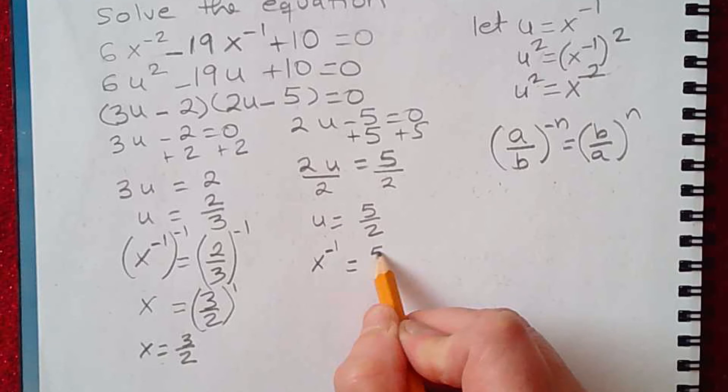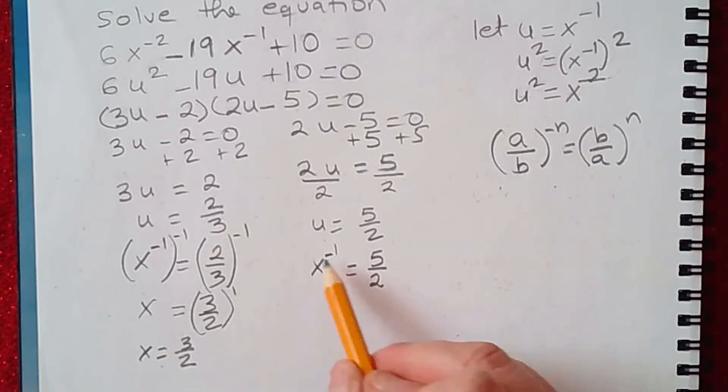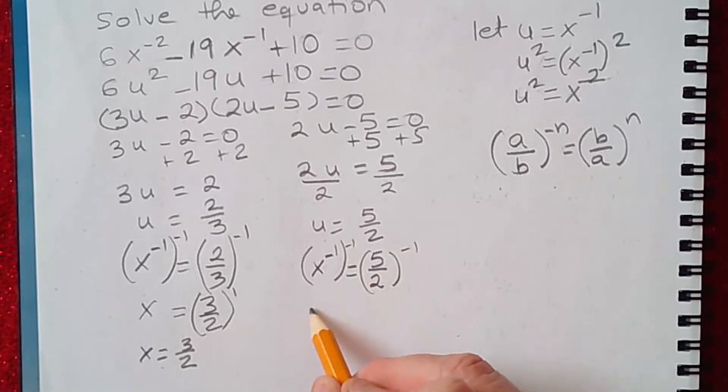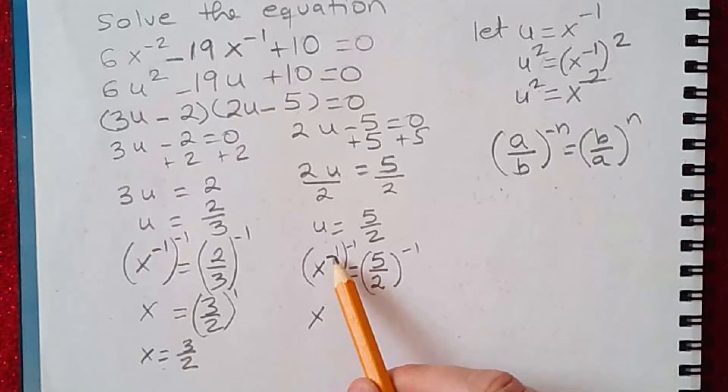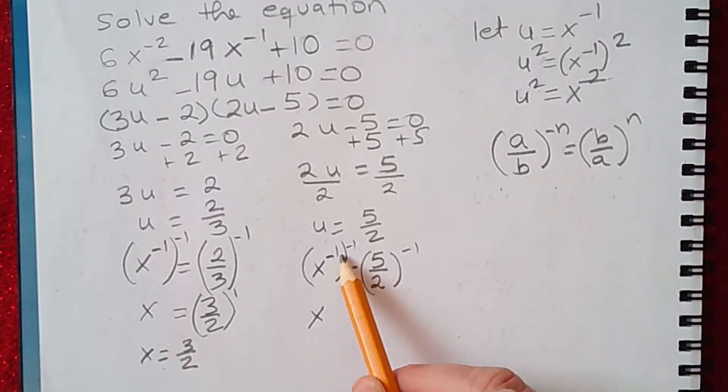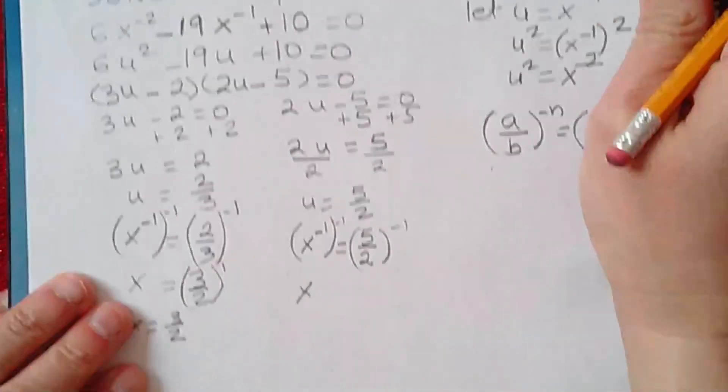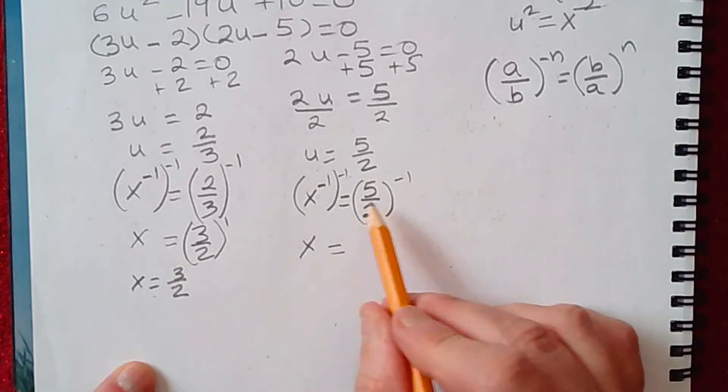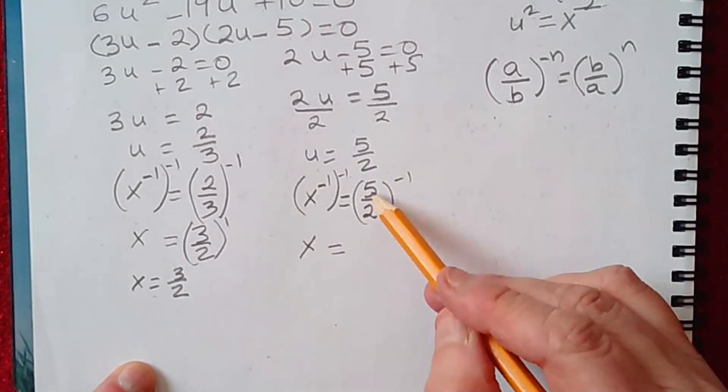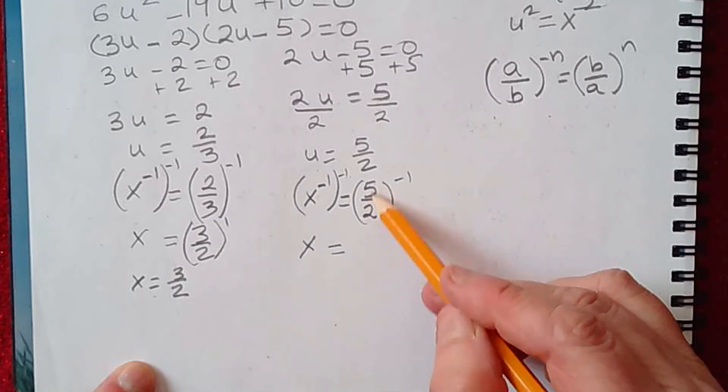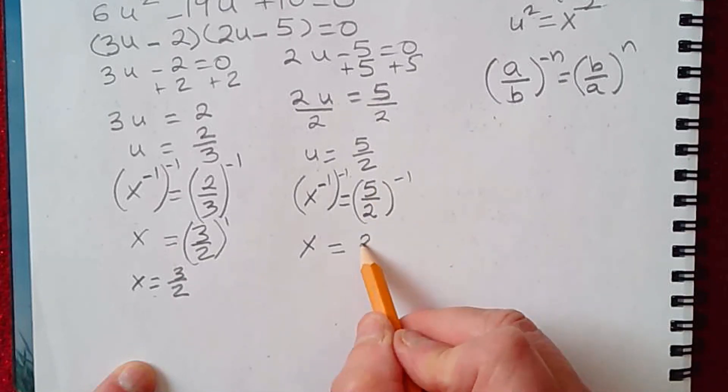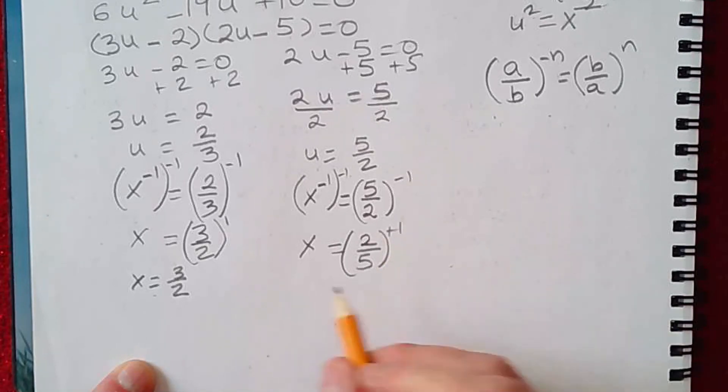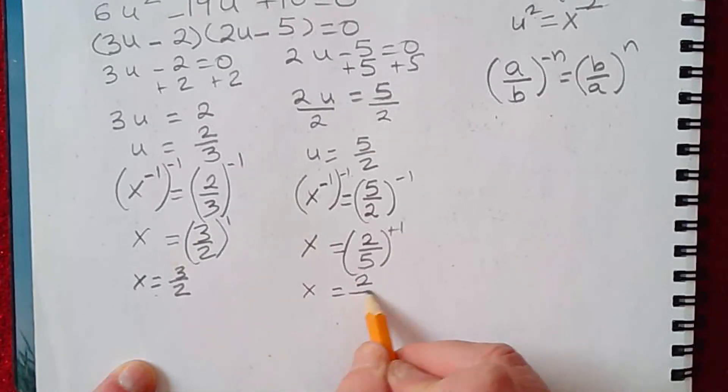Now again, I need x, not x to the negative 1, so I need to raise this to the negative 1 power. By the laws of exponents, you multiply them, that will give you positive 1, and positive 1 is simply 1, so I can leave the power out. I'm going to do the same thing as I did here. You flip, you take the reciprocal of the fraction, that's 2 over 5, and you change this to positive plus 1. But again, that's the same as 2/5.